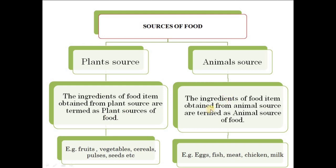The ingredients of food items obtained from animals are termed as animal source. Examples of plant sources of food are fruits, vegetables, cereals, pulses, and seeds. Examples of animal sources of food include eggs, fish, milk, and chicken. Let us now learn about these sources of food in detail.